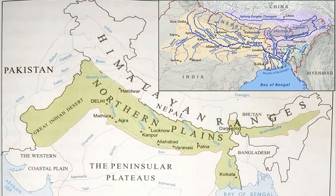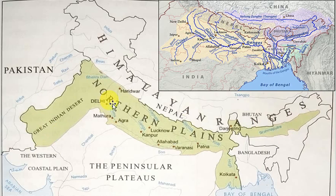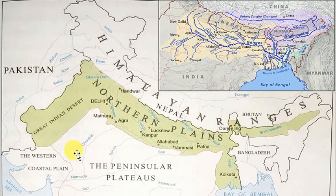It extends from the Satlaj River in the west to the Brahmaputra River in the east, for about 2400 kilometers. The width of the Northern Plains decreases towards the east. The Northern Plains of India are made up of fine silt brought by the rivers coming from the Himalayas in the north.